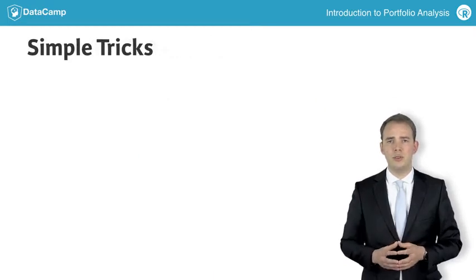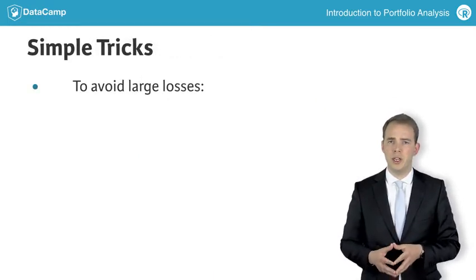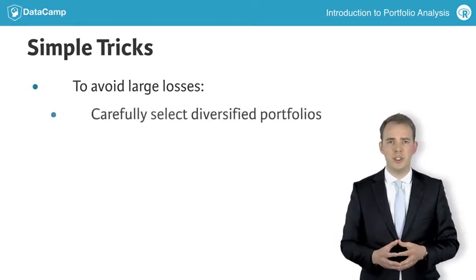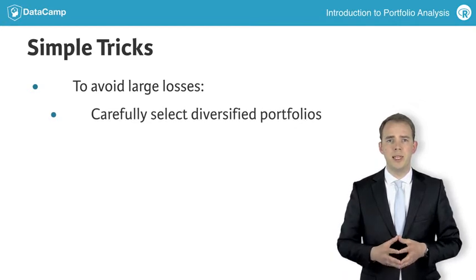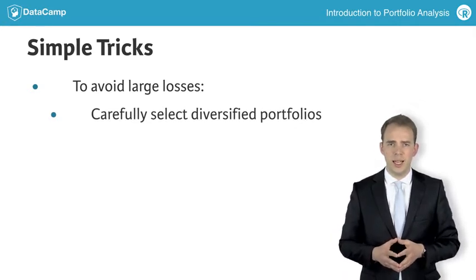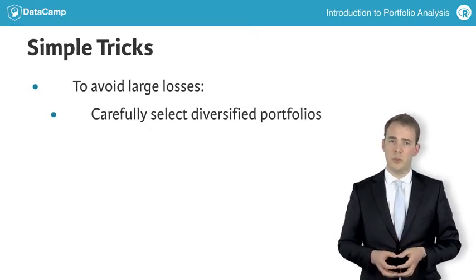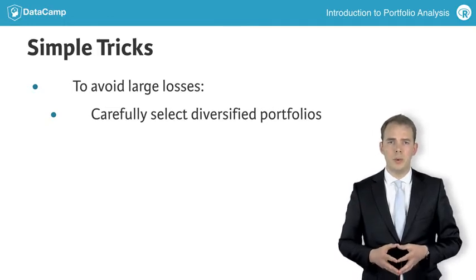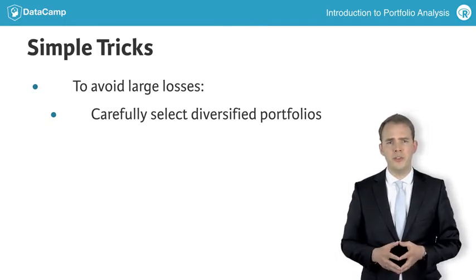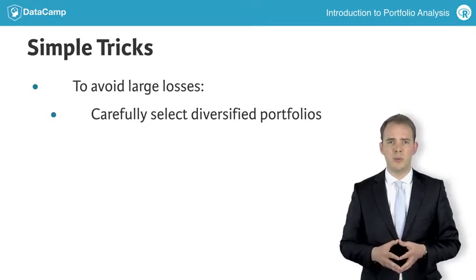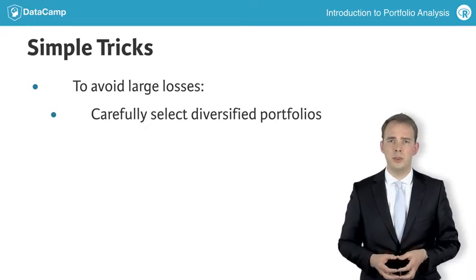There are two simple tricks to reduce the risk of suffering large losses. The first one is to seek portfolio risk diversification. This means that one should avoid investing in one single asset, but instead invest in many different assets. Such a combination of investments is called a portfolio. When I review portfolios, I often find that by choosing more intelligent combinations of investments, it becomes possible to increase the portfolio's expected return and reduce the risk.